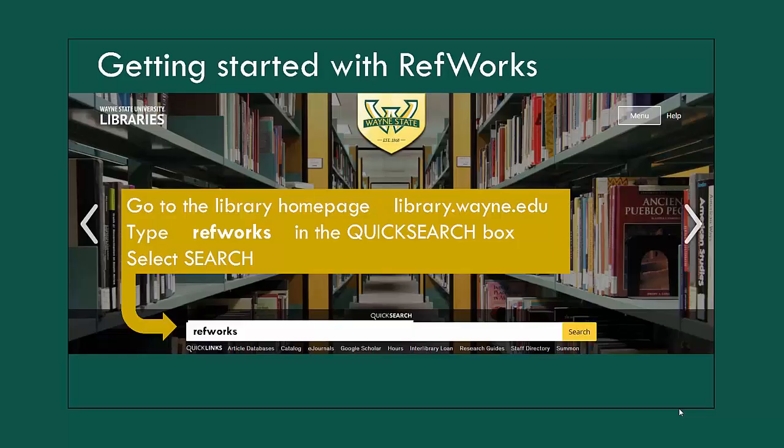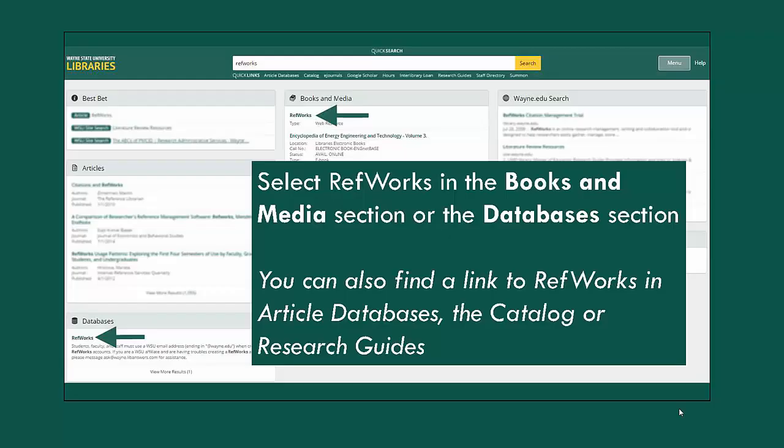To get started with RefWorks, go to the library homepage at library.wayne.edu and type RefWorks in the quick search box, then select Search. Select RefWorks in the books and media section or the databases section of your search results.